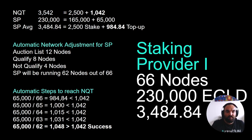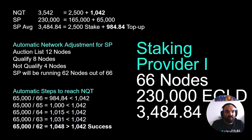Staking provider 1 gets 12 nodes shuffled into the auction list, and the system automatically calculates that 8 nodes qualify and 4 do not qualify — so the staking provider will actually be running 62 nodes out of 66. The calculation steps: total top-up divided by total nodes, and if the result is lower than the network NQT, the system automatically does a minus-1-node step until it reaches equal to or greater than NQT. In our case, it needed 4 steps to reach it.